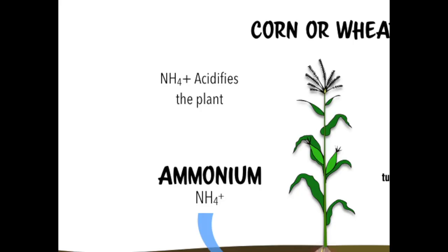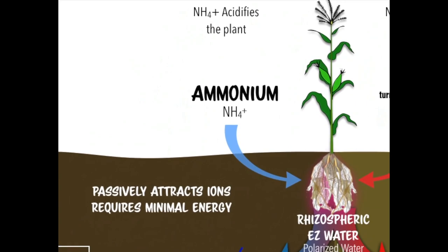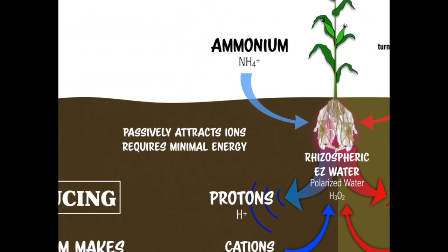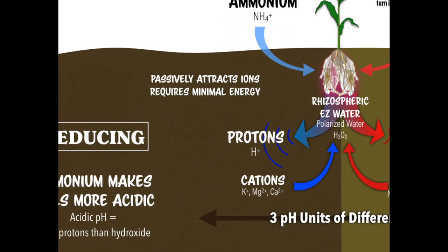Ammonium — NH4 plus — is the cation. It's acidic; it lowers soil pH and acidifies the soil. It is bringing in more H, so it's lowering the pH. This can really help, but if you go too far, you could acidify the soil and release heavy metals.